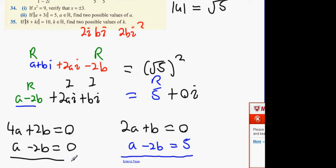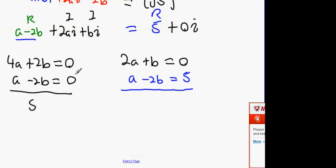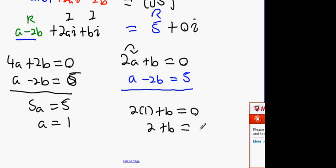And what you're going to get here is that 5a equals 5, and then you're going to get a equals 1. Happy enough with that? And b therefore would be: if a is 1, 2 times 1 plus b equals 0. What does b have to be then? b equals minus 2.